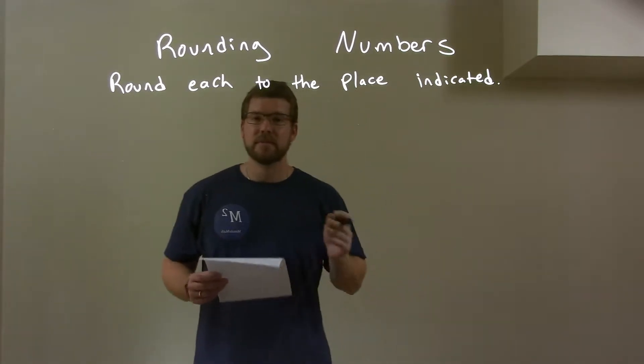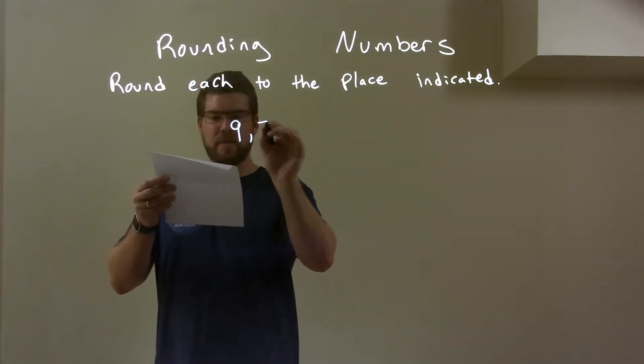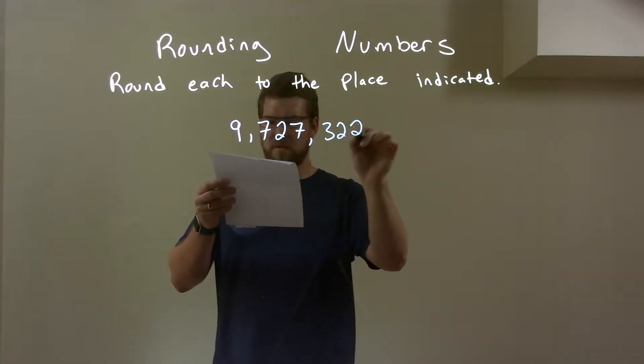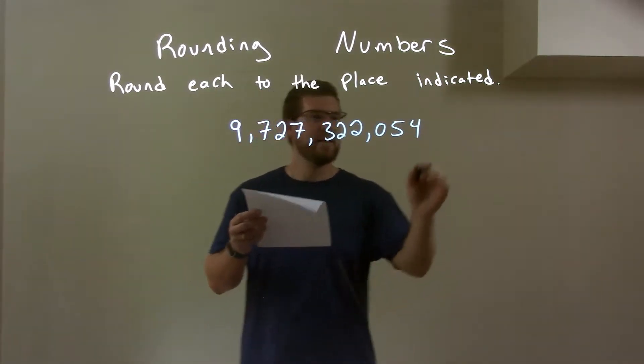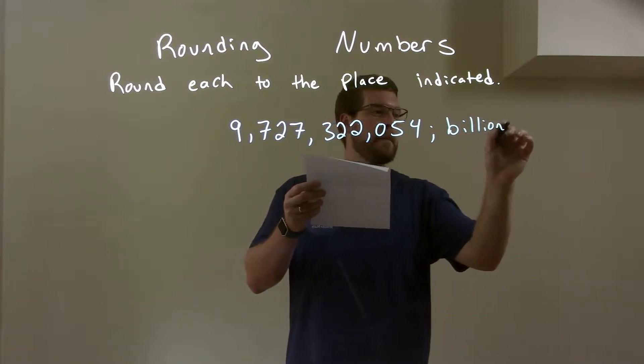So, if I was given this number: 9,727,322,054. Okay? We're rounding that in the billions. Billions.